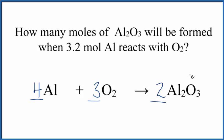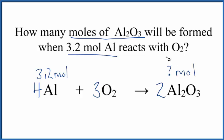Here's how we can figure this out. We have 3.2 moles of aluminum, and we want to know how many moles of aluminum oxide are formed. If you just look at the ratio 4 to 2, we cut this number in half to get 1.6 moles of Al₂O₃.